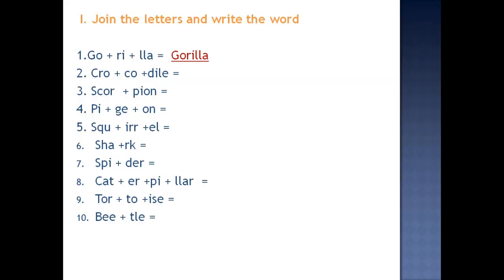So it's all related to Poonam's day out lesson. See here in this section I have given join the letters and write the word. So I have given some letters. You have to join these letters and write the word. So first is go G-O plus R-I plus L-L-A, that is a gorilla. So you have to do all these like this. All these remaining things you have to do like this.